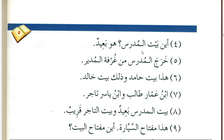Optional question: أين بيتُ المدرسِ؟ Where is the house of the teacher? هو خارجَ المدرسةِ — it is outside the school. هذا بيتُ حامدٍ وذلك بيتُ خالدٍ. This is the house of Hamid and that is the house of Khalid. ابنُ عمارٍ طالبٌ وابنُ ياسرٍ تاجرٌ. Son of Ammar is a student and son of Yasir is a merchant. بيتُ المدرسِ بعيدٌ وبيتُ التاجرِ قريبٌ. The house of the teacher is far and the house of the merchant is near. هذا مفتاحُ السيارةِ — this is the key of the car. أين مفتاحُ البيتِ؟ Where is the key of the house?